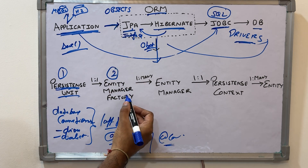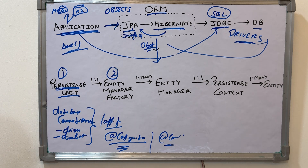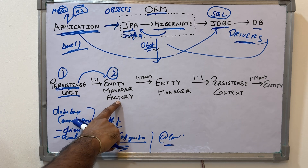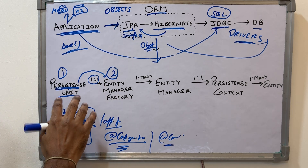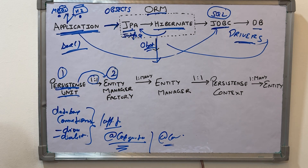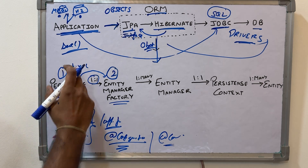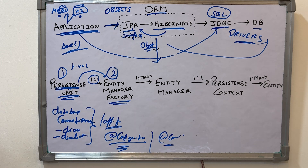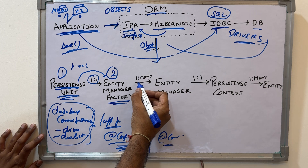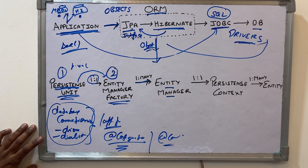The second component is the Entity Manager Factory. During application startup, the Persistence Unit information is used to create an Entity Manager Factory object. It's a one-to-one relationship — one Persistence Unit, one Entity Manager Factory. If you have two Persistence Units, two Entity Manager Factories will be created. Without Spring Boot you use a persistence.xml file; with Spring Boot you use application.properties.